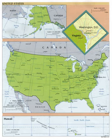Some cities are consolidated with, and coterminous with, their counties, including Philadelphia, Honolulu, San Francisco, Nashville, and Denver. That is to say, these counties consist in their entirety of a single municipality, the government of which also operates as the county government. Some counties, such as Arlington County, Virginia, do not have any additional subdivisions. Some states contain independent cities that are not part of any county. Each of the five boroughs of New York City is coterminous with a county.